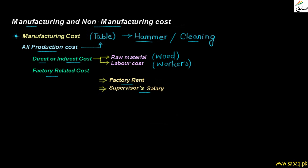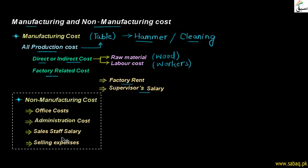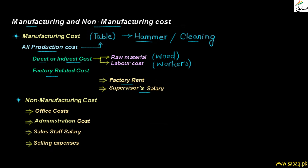Now we look at Non-Manufacturing Costs. For example, office costs — in our office we use stationery and pay utility bills. There are also people managing the office, which is the cost of administration. Then we have sales staff who are paid commission and salary. After producing the table, we have to deliver it to the customer, so there are selling and delivery expenses.